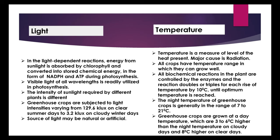The night temperature of greenhouse crops is generally in the range of 7 to 21°C. Greenhouse crops are grown at day temperatures that are 3 to 6°C higher than the night temperature on cloudy days, and 8°C higher on clear days.